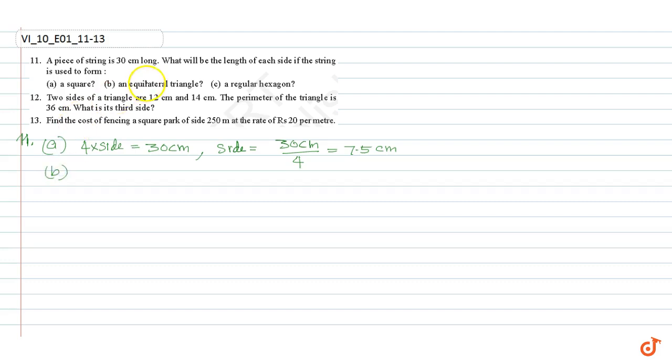Part B: An equilateral triangle. We know that an equilateral triangle has 3 equal sides, so the perimeter is 3 times side equal to 30 cm. Therefore, side is equal to 30 cm divided by 3, equal to 10 cm.